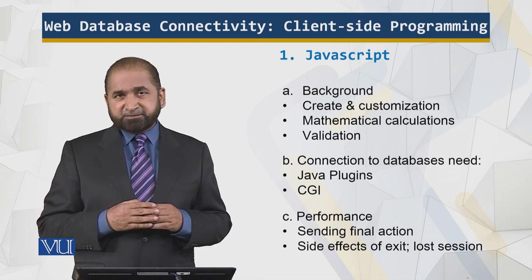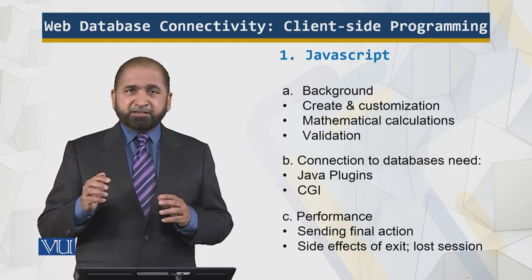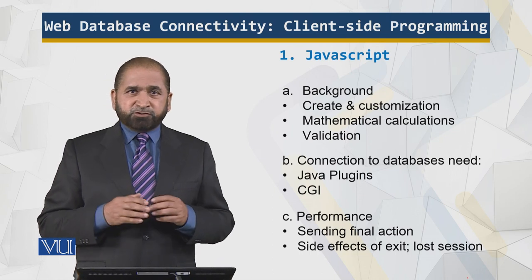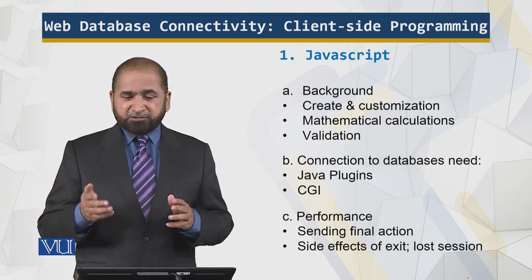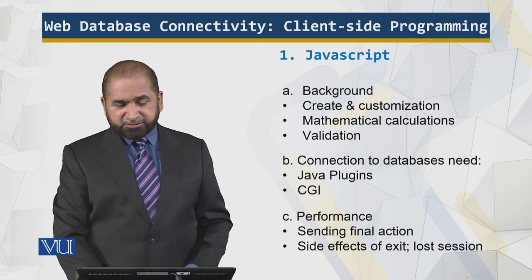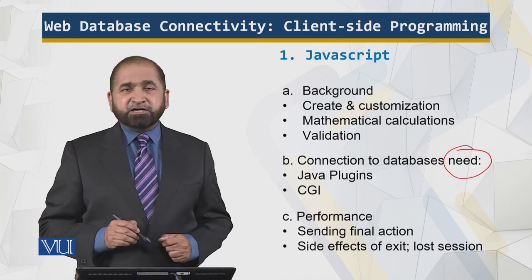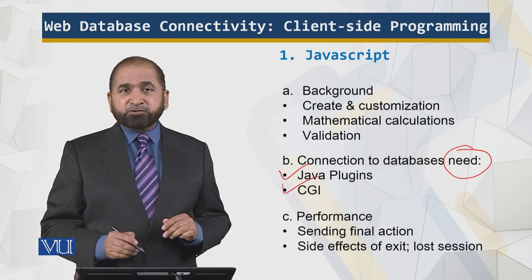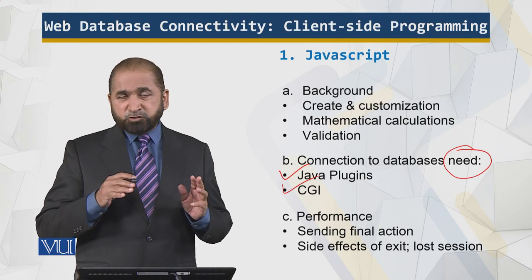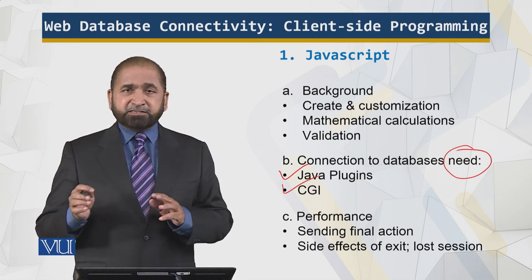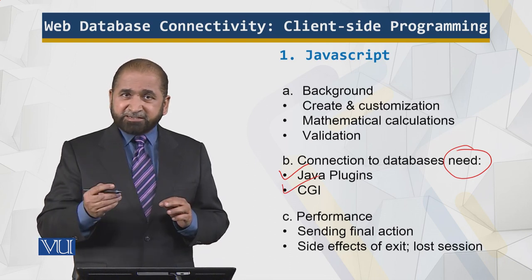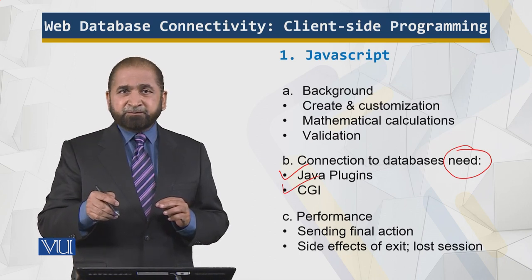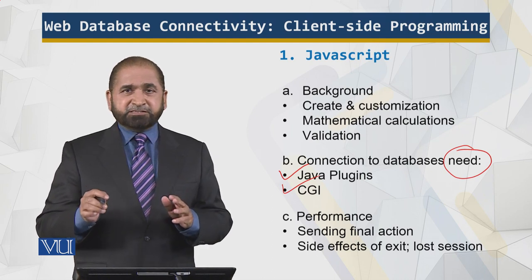JavaScript is also used for validation — for example, if I enter an email address, it should have the necessary at-sign and domain. JavaScript requires Java plugins and CGI — Common Gateway Interface — with CGI scripts written in C, C++, or Java, which facilitate actions, retrieval, and writing on the database.